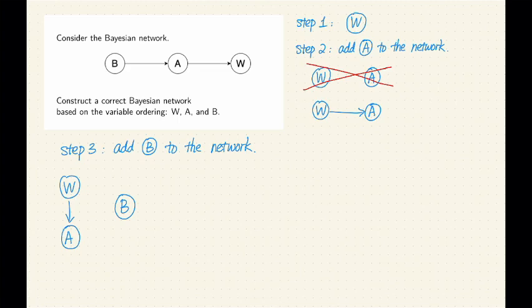B and A are directly connected, so B is not independent from A. B is also connected to W indirectly through A. So B is not independent from A, B is not independent from W. This option does not work.